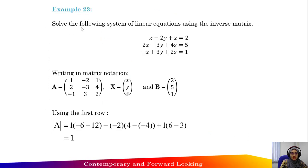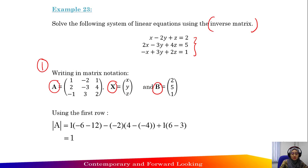Example 23: Solve the following system of linear equations using inverse matrix. Step 1: Write the linear equations in matrix notation A, X, B. Matrix A equals the coefficient matrix: [1, -2, 1; 2, -3, 4; -1, 3, 2]. The variable vector X equals [X, Y, Z], and matrix B equals [2, 5, 1], the constants on the right side.